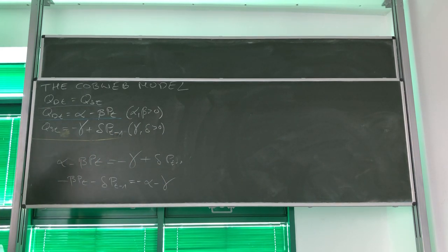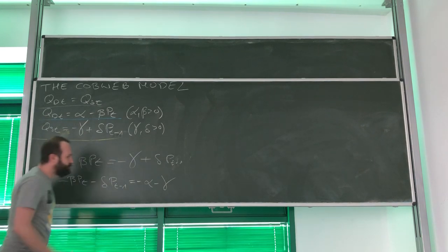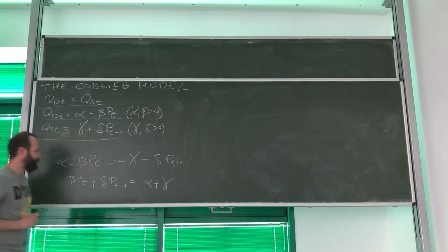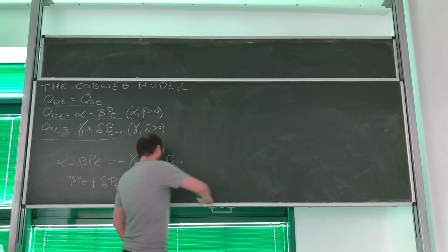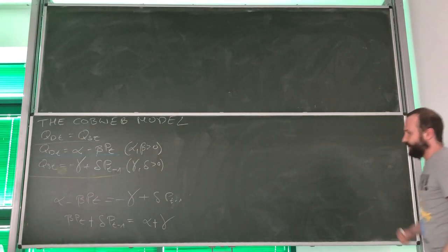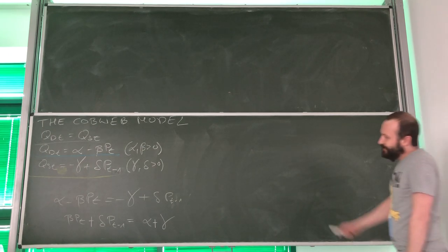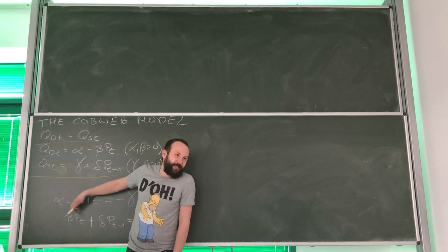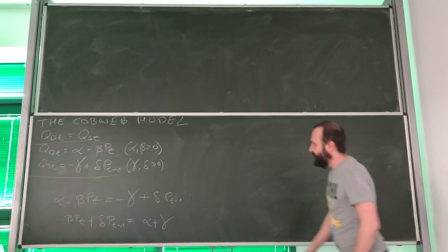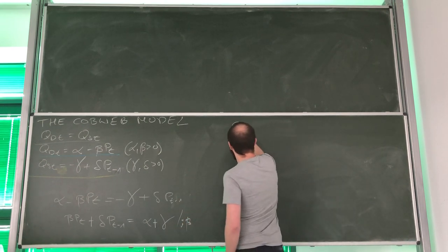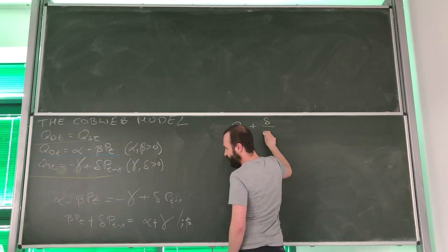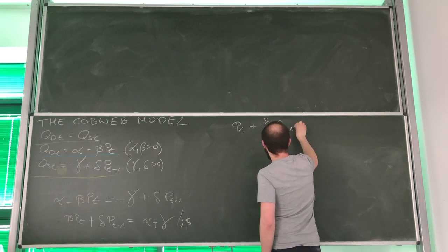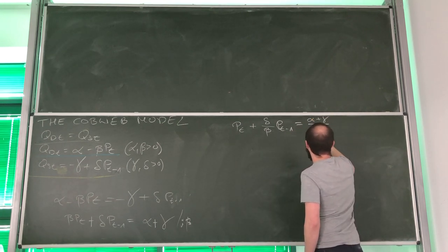It's a good idea to multiply both sides by negative 1, which gives us beta pt plus delta pt minus 1 equals alpha plus gamma. Since we have a coefficient on pt, we divide both sides by beta, so we get: pt plus (delta over beta) times pt minus 1 equals (alpha plus gamma) over beta. We can also shift the subscript by one to get pt+1 plus (delta over beta) pt equals (alpha plus gamma) over beta.